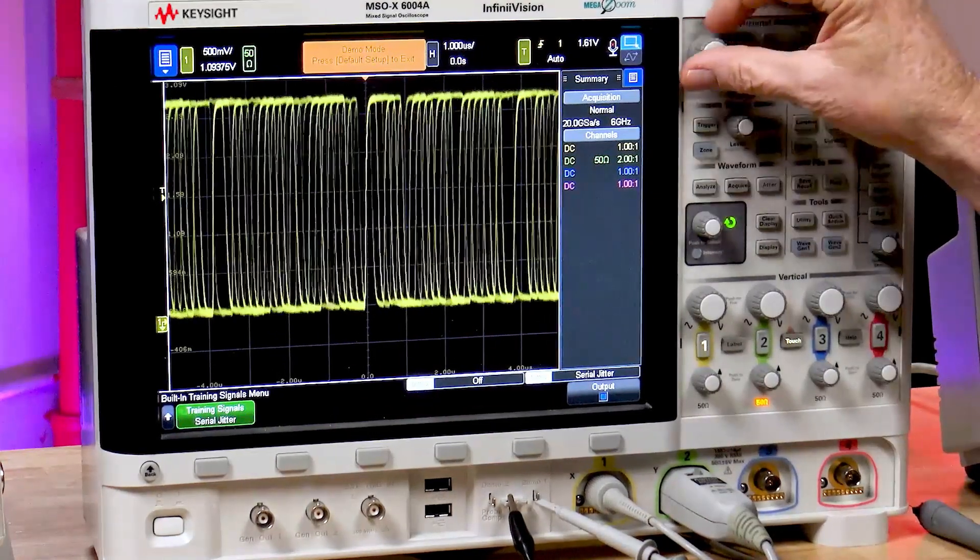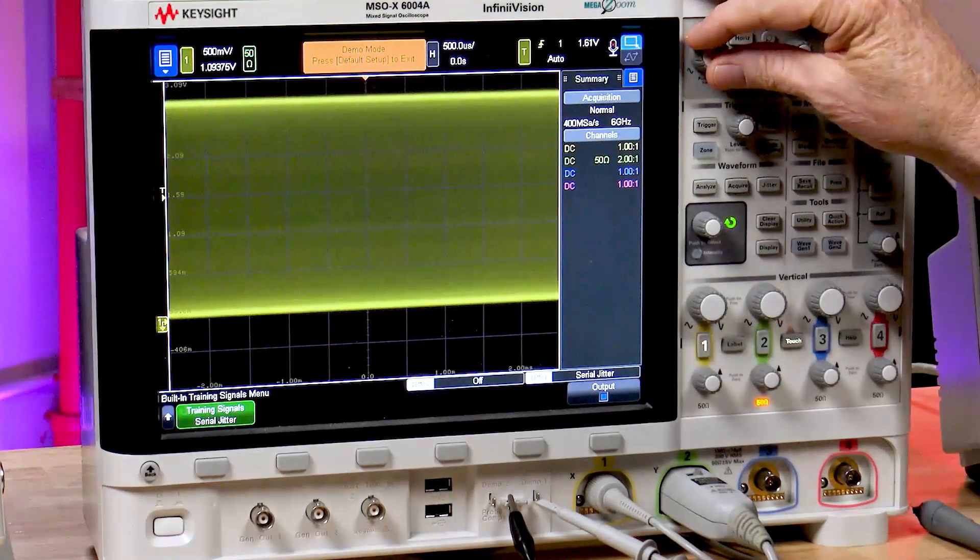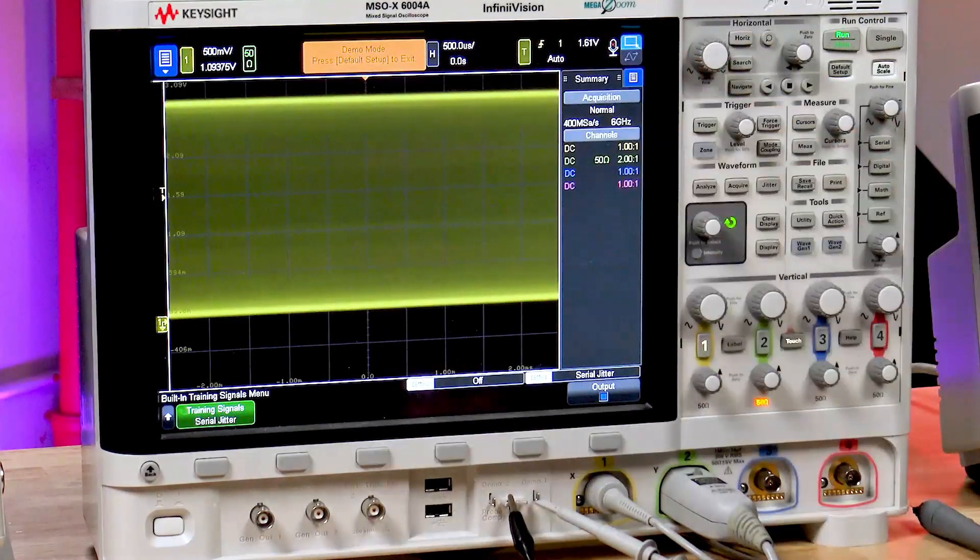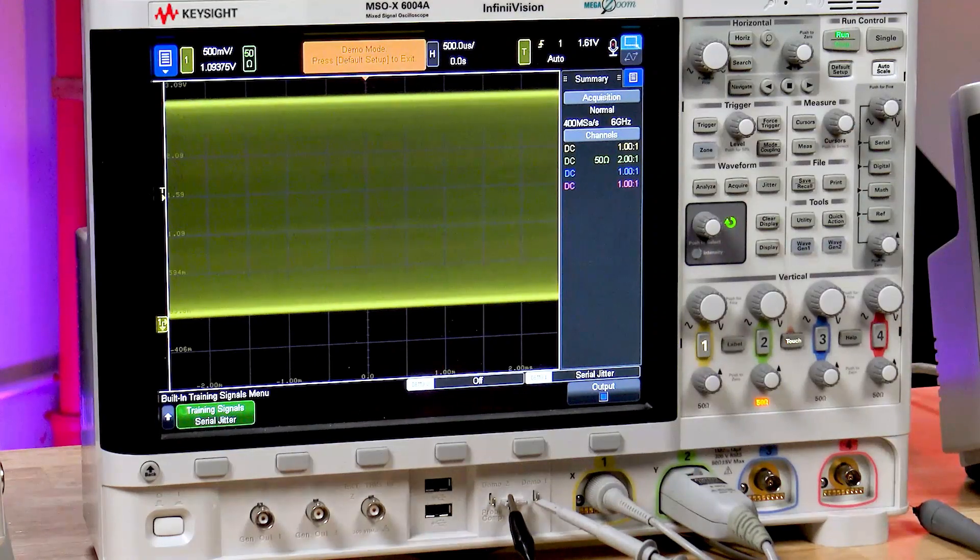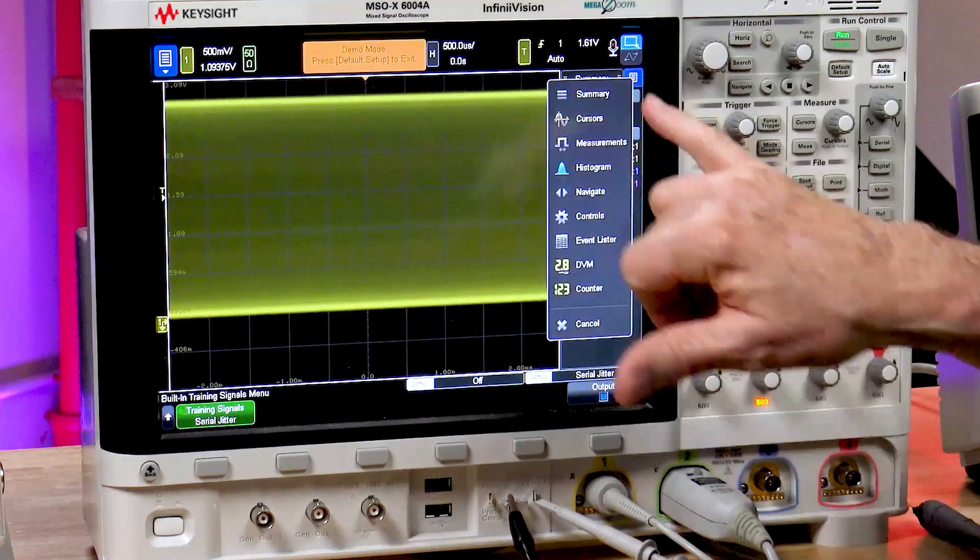So I'm going to go ahead and press run, and I'm going to get thousands of edges on screen. Right now I'm at 500 microseconds per division. How many edges are there? I'm not really sure. Let's make a measurement.